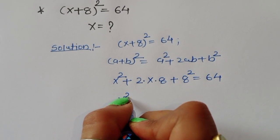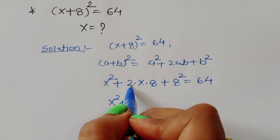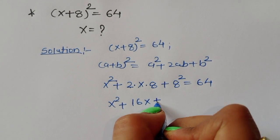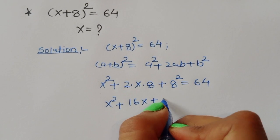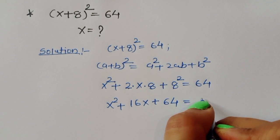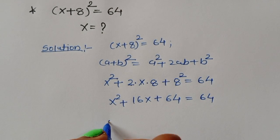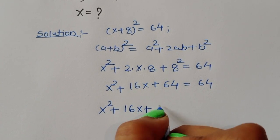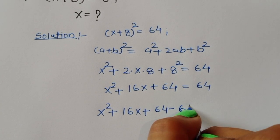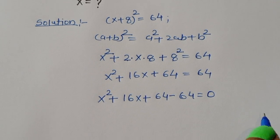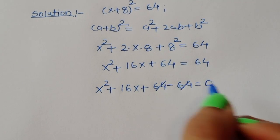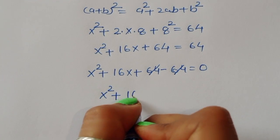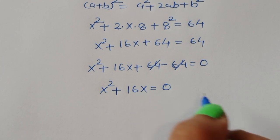So x square plus 16x plus 8 square is equal to 64. We can write this as x square plus 16x plus 64 minus 64 is equal to 0. The plus 64 and minus 64 cancel, so x square plus 16x is equal to 0.